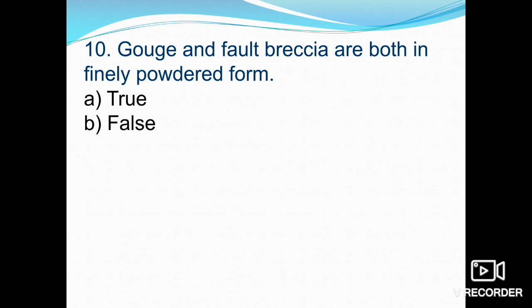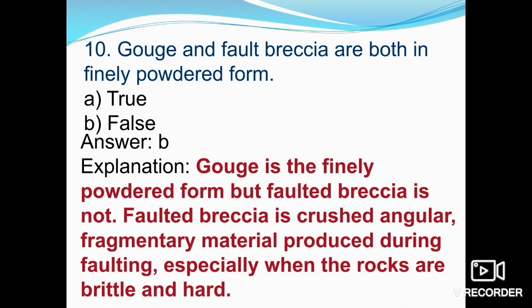The next statement says: gouge and fault breccia are both in finely powdered form — true or false? This is false. Gouge is the powdered or pulverized material, whereas fault breccia is not powder — it consists of angular fragments embedded in a matrix of finely ground rock material. Gouge is the finely powdered form, but fault breccia is the crushed angular fragmentary material produced during faulting, especially when rocks are brittle and hard. So the statement is false, option B.